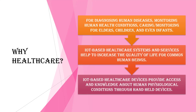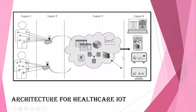Moving into the architecture for Healthcare IoT, it is divided into four layers. Layer one is completely embedded with sensors. Layer two is a unit which senses the data and transfers it to the cloud. Layer three maintains the database and cloud storage. Layer four consists of a monitor, mobile application, or any other interface that communicates to the user or customer to know about their health status.